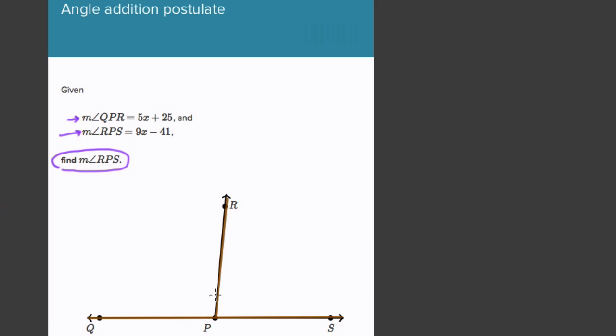QPR is this angle right here, and that's 5x plus 25. RPS is this other angle right here, and that is 9x minus 41. I know that if these two angles form a straight line, I can add them to get 180, because they're supplementary.